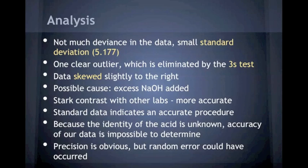One very noticeable thing about our graph is that there is very little deviance in our data, and this can be backed up mathematically by the standard deviation being only 5.177, which is very small. We did have one clear outlier, but this outlier was eliminated by the threes test, so our final data was a lot more accurate, leading to the standard deviation of 5.177.